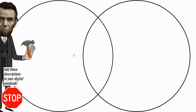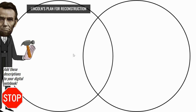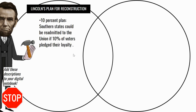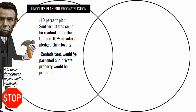There are multiple plans that come about for Reconstruction. The first plan is brought to us by President Abraham Lincoln. This presidential plan for Reconstruction was going to be a very quick plan. His plan was to implement the idea of a 10 percent plan — only 10 percent of Southern citizens that voted would have to pledge loyalty to the Union in order for the entire South to be readmitted. That means 90 percent didn't have to.